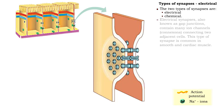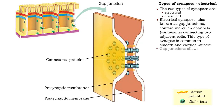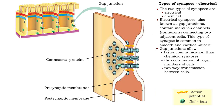Electrical synapses are called gap junctions and have many ion channels, called connexons, connecting two adjacent cells. Electrical synapses allow quicker communication, more coordinated communication between cells, and two-way transmission.